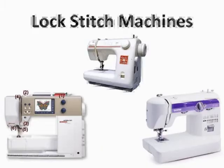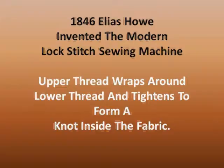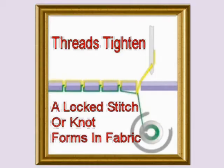The lock stitch sewing machine is more common, and probably 90% of all sewing machines are lock stitch machines. First invented in 1846, the lock stitch basically has an upper thread and a lower thread. The upper thread is driven through the fabric with the needle, wraps around the lower thread, and tightens as the needle bar comes up to form a knot or a lock stitch inside the fabric, as illustrated here.